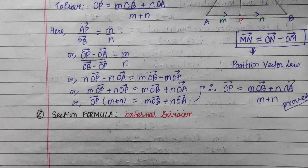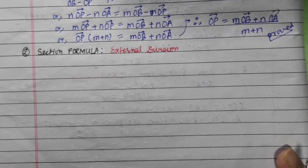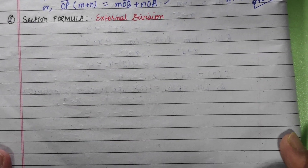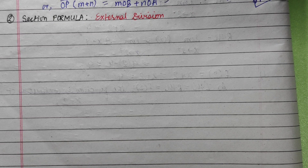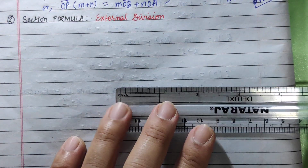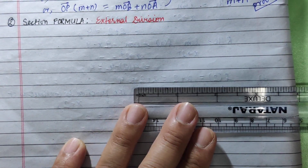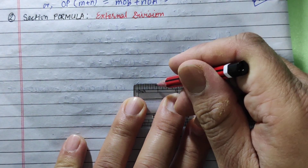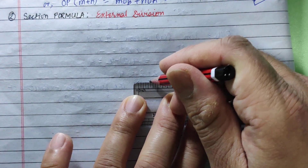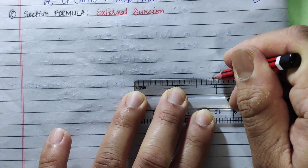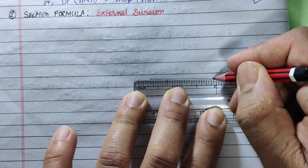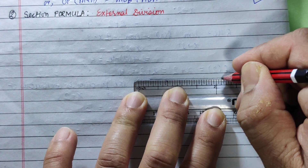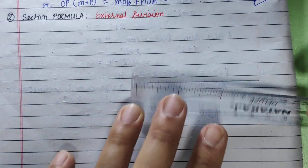Now we can find the external division. What is the external division? We will find the point where P lies outside the line segment AB.